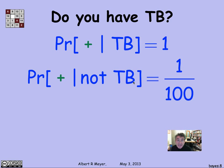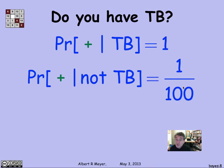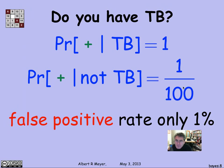Given that you don't have TB, the probability that the test will say that you do have TB is only 1 in 100, because 99% of the time it correctly says you don't have TB, and 1% of the time it says you do have TB. This is called a false positive rate — it's falsely claiming that you have TB when you really don't. That rate, we're hypothesizing, is only 1%.